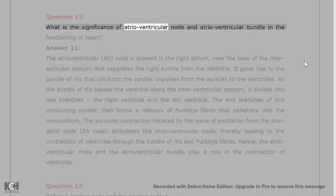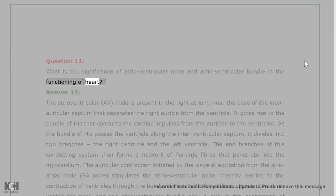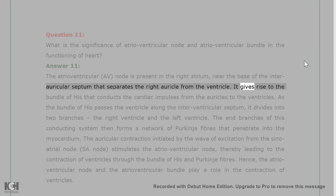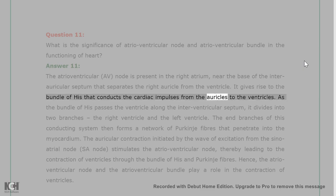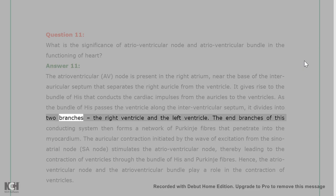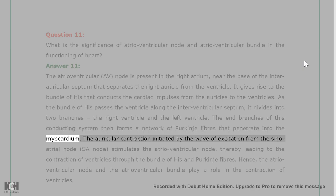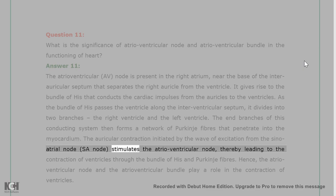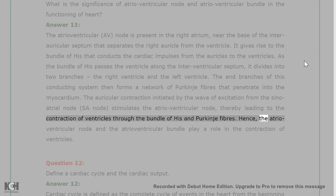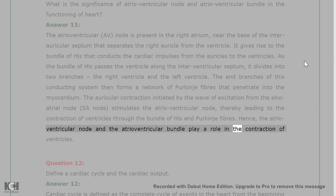Question 11: What is the significance of the atrioventricular node and atrioventricular bundle in the functioning of the heart? Answer 11: The atrioventricular node is present in the right atrium near the base of the interauricular septum that separates the right auricle from the ventricle. It gives rise to the bundle of His, which conducts cardiac impulses from the auricles to the ventricles. As the bundle of His passes through the ventricle along the interventricular septum, it divides into two branches for the right and left ventricles. The end branches form a network of Purkinje fibers that penetrate into the myocardium. Auricular contraction initiated by the SA node stimulates the AV node, leading to ventricular contraction through the bundle of His and Purkinje fibers.